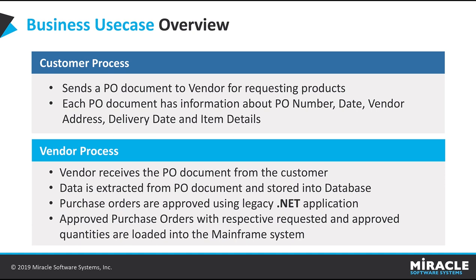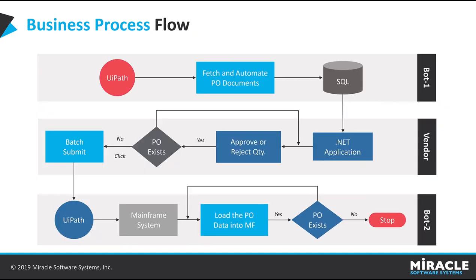We'll see the business process diagram for this use case. Coming to the flow of the vendor process, it consists of two bots — bot one and bot two. Regarding components, bot one comprises UiPath as the automation tool and SQL Server as the database. Vendor components are a Windows form and batch submit. Bot two comprises UiPath automation tool and the mainframe system.